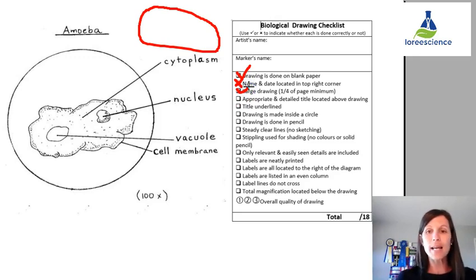Are there appropriate and detailed title above the drawing? Yeah, there's definitely a detailed title. It's telling us exactly what is in the image which is an amoeba. Is the title underlined? Yes, it certainly is.